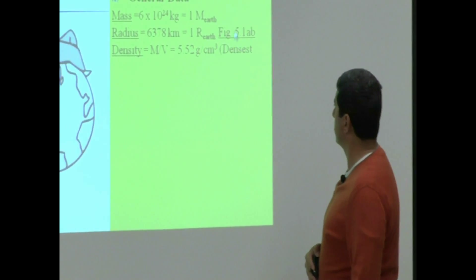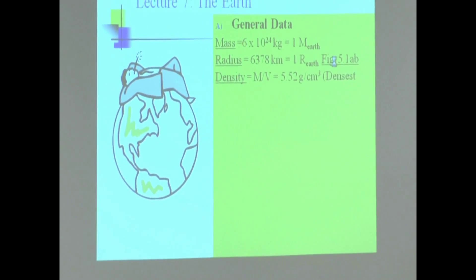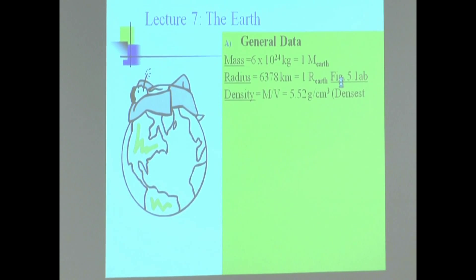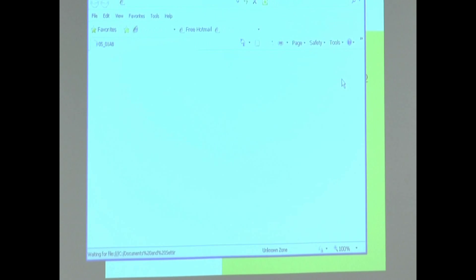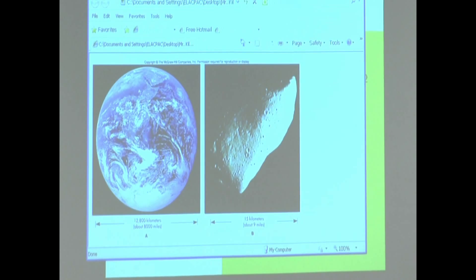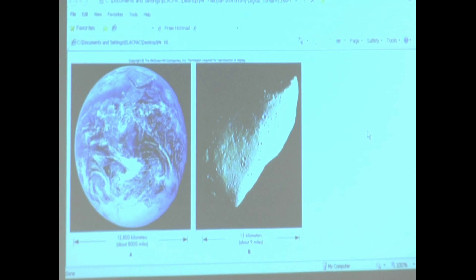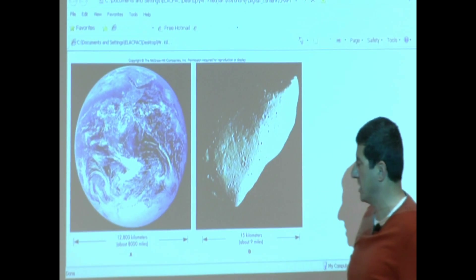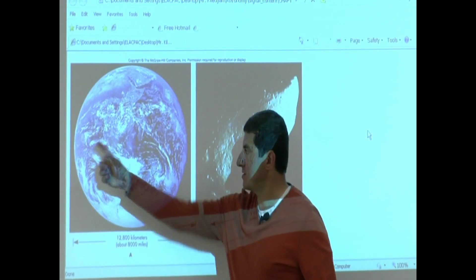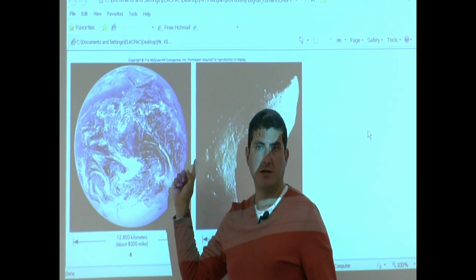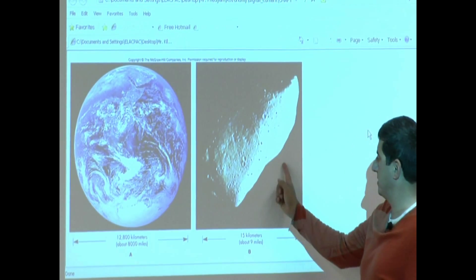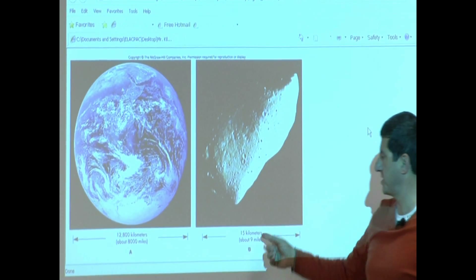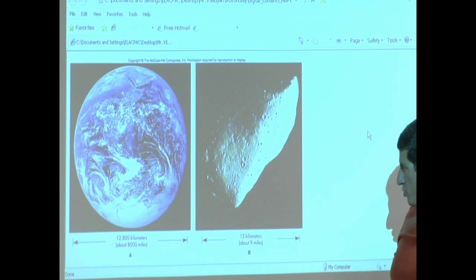We can see this picture here. It shows you roughly the size of the Earth, and then of course compared to an asteroid, much, much bigger. The diameter of the Earth is 12,800 kilometers, about 8,000 miles. And an asteroid is about 9 miles across — so a lot, lot, lot smaller.